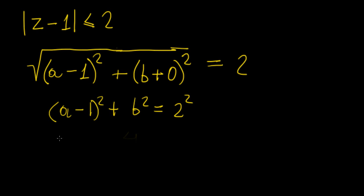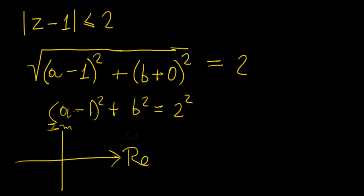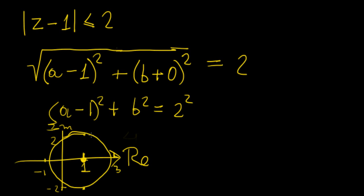We have a shift along the real axis. The term a minus 1 becomes zero at a equals 1, so the circle is centered at 1 on the real axis with radius 2. That puts the points at minus 1, 3, 2, and minus 2. Since it's less than or equal to 2, we include the circumference — drawing a solid line — and shade the area inside. So that's our region.